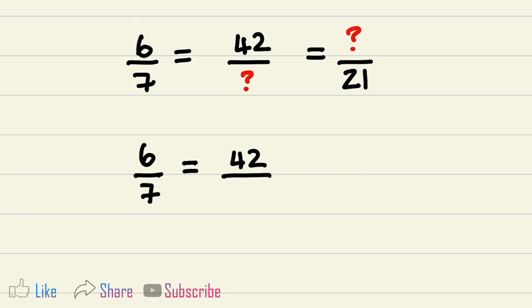Now let's look at 6 over 7. To go from 6 to 42, I need to multiply 6 by 7, because 6 times 7 will give us 42.